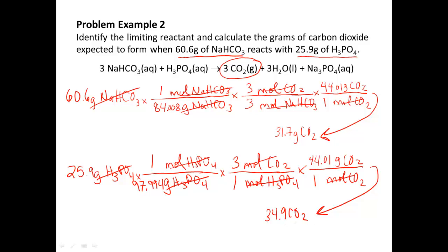Step four: we compare 31.7 grams and 34.9 grams. The smaller number is 31.7 grams — that is our theoretical yield, so we put a box around that. That means the reactant that led to this amount, sodium hydrogen carbonate, was our limiting reagent. In video two, we're going to review these steps and take it a couple of steps further, because there's a lot more we can calculate from these problems. Get ready for that, and I will see you in video two.